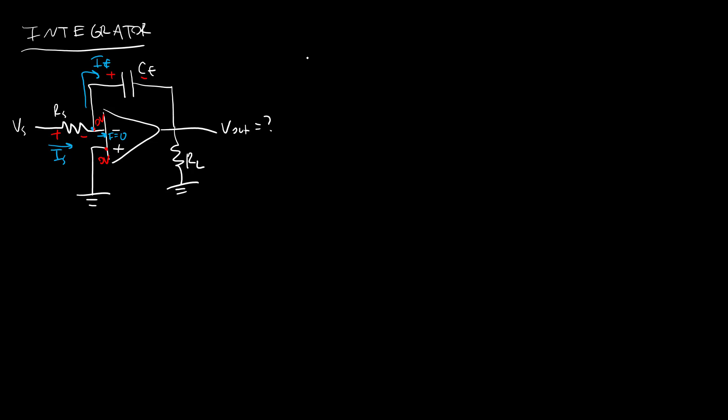So same thing I did before. I'm going to go through this a little faster this time. I have IS equals IF for my resistor. That's going to be Vs over Rs. And then for the capacitor, I have I equals C dV dt, so that's going to be CF d dt. But in this case, I have zero minus Vout, so that's d dt negative Vout.